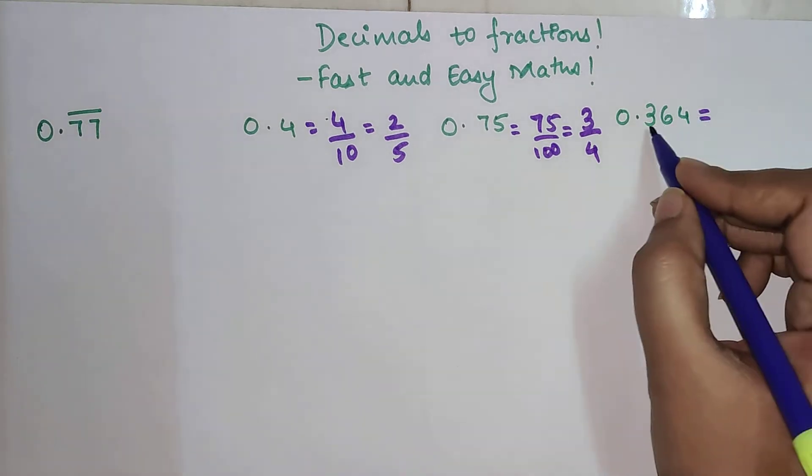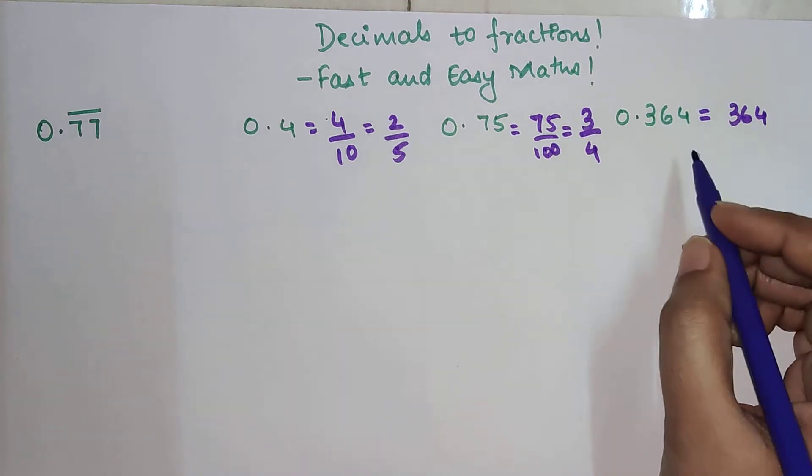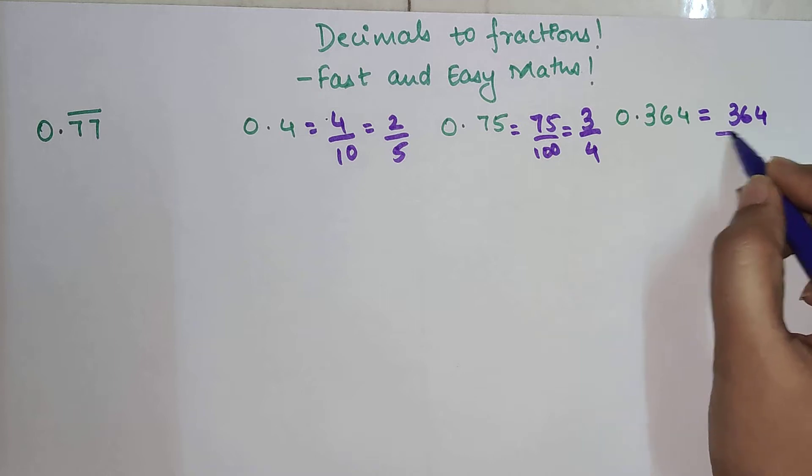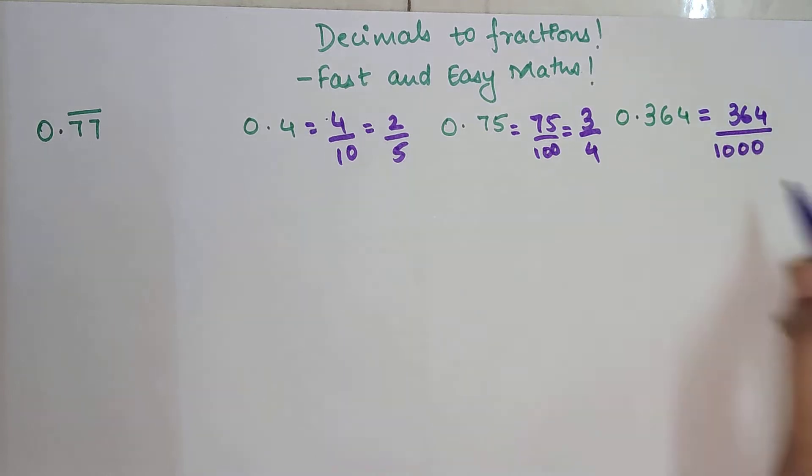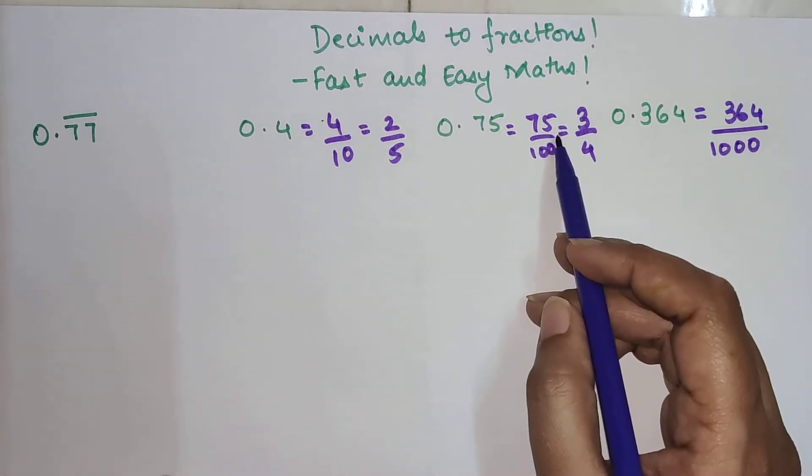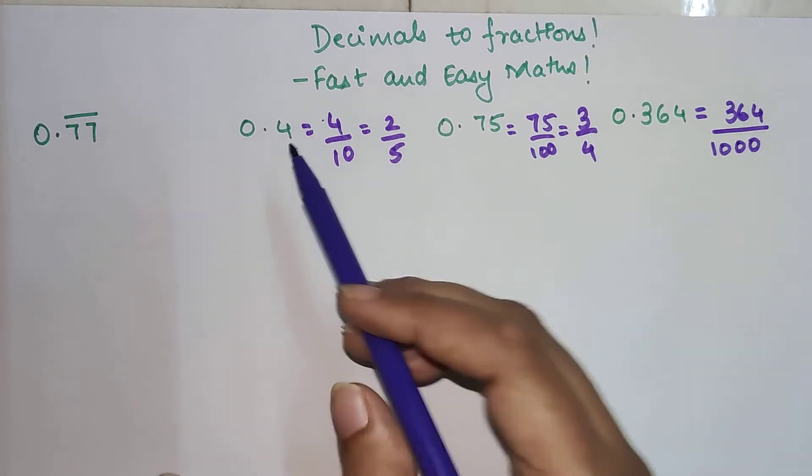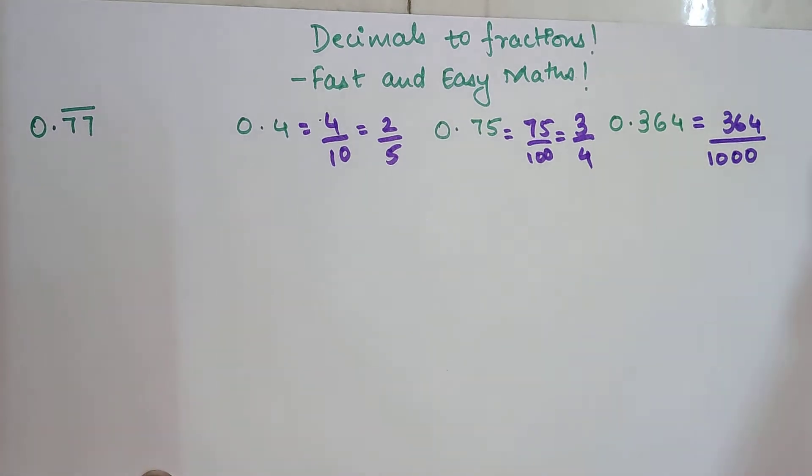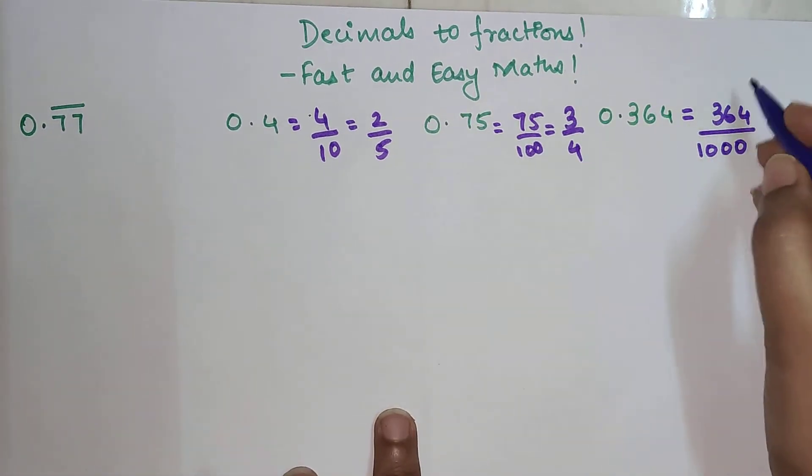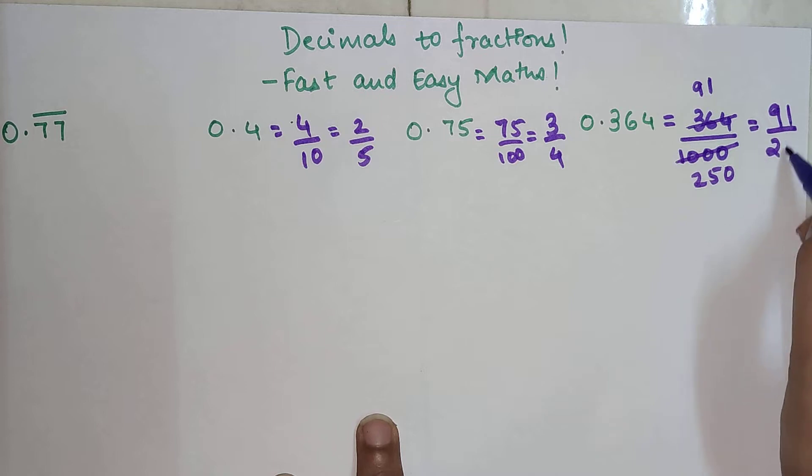Please understand there are how many digits after the decimal point. So here we will write 364. After the decimal point there are literally 3 digits, so the number of zeros will also be 3, and 1 will represent your decimal point. Similarly for 75, we had 2 digits after the decimal point, so we put 2 zeros and 1 representing the decimal point. This can be cancelled further - both of them are going in 4's table. So this will be 91 and this will be 250. Final answer is 91 upon 250.